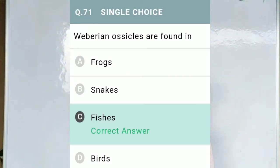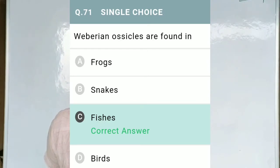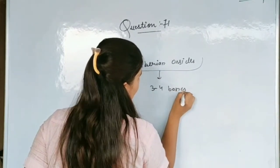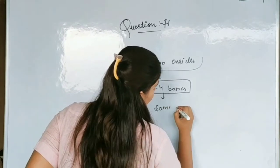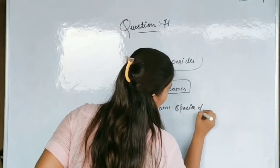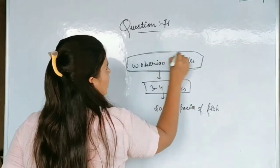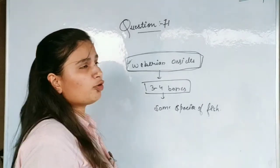Question No. 71: Weberian ossicles are found in — Option A, frog; Option B, snake; Option C, fishes; and Option D, birds. Weberian ossicles are a type of network formed by three to four bones, and this structure is found in some species of fish. They connect the air bladder and help in respiration.